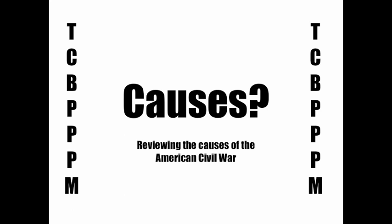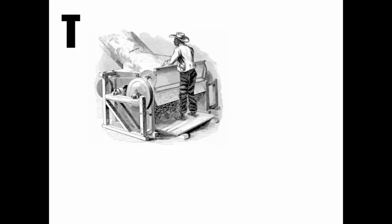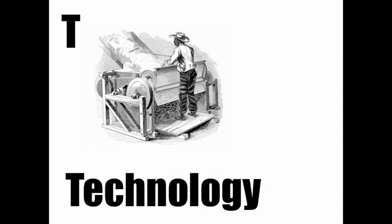Let's look at the causes of the American Civil War. The T stands for technology — the cotton gin. An innovative machine intended to abolish slavery, but Eli Whitney's innovative machine actually made slavery more profitable. The need for more land meant slaveholders pushed further west to plant more and more cotton. Technology.